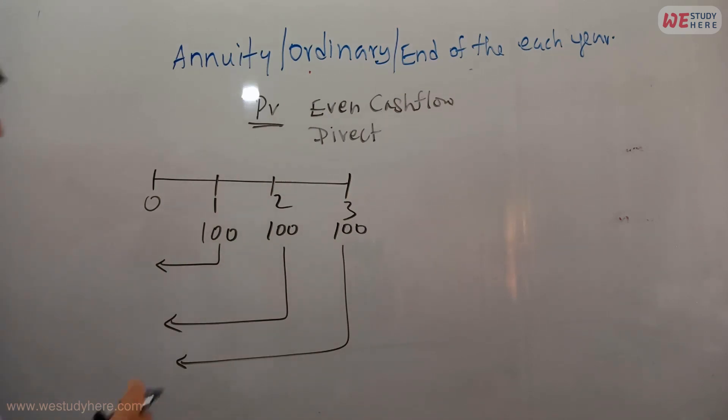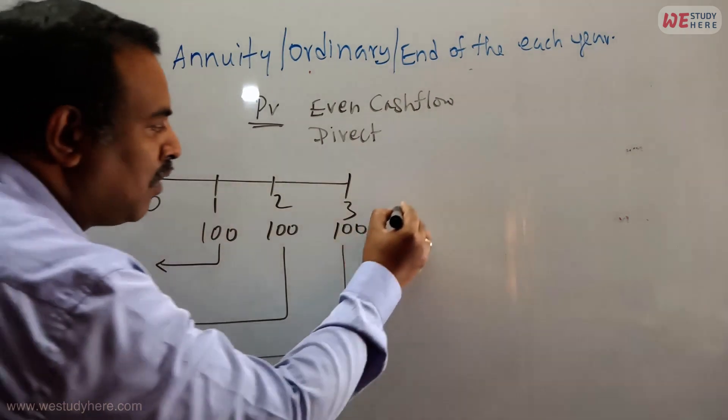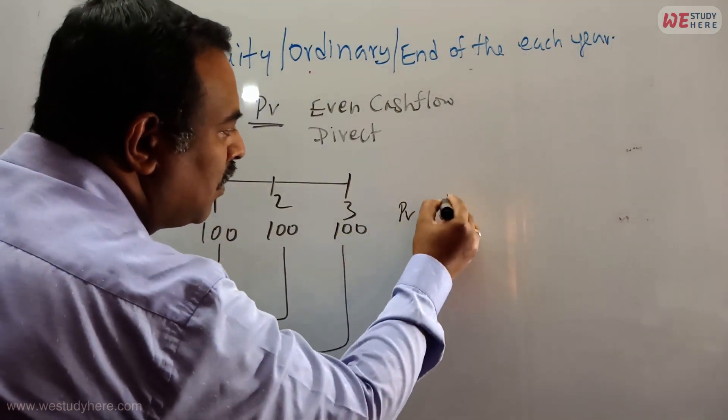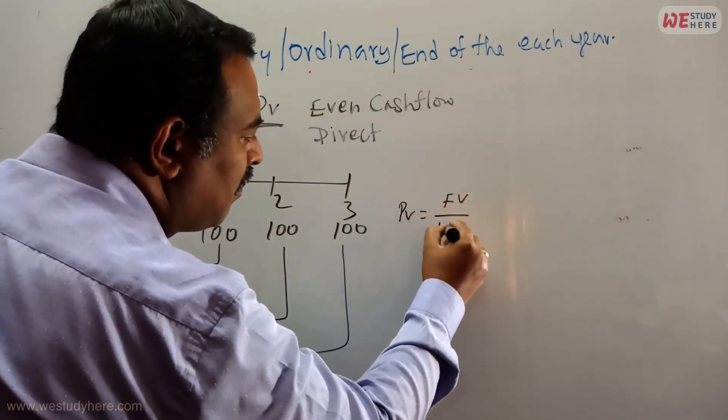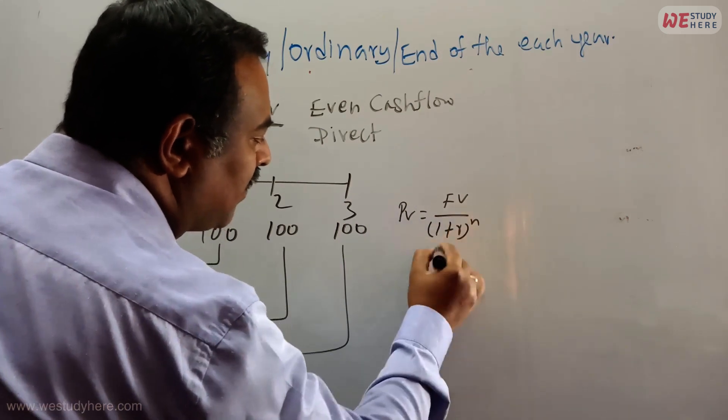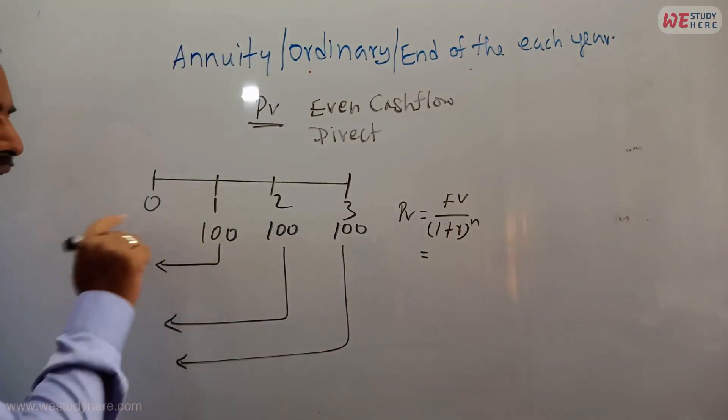Now if I take the present value of all these figures, what is the formula? This is future value. What is the formula to find out the present value? Future value divided by 1 plus r raised to the power n.